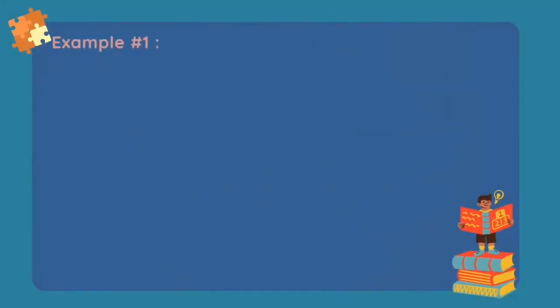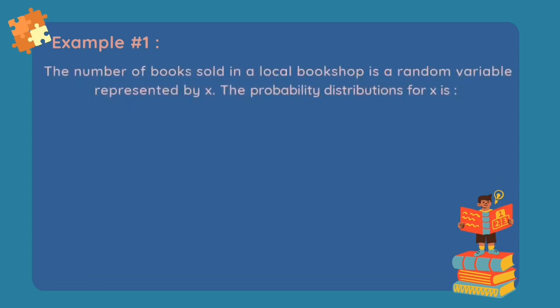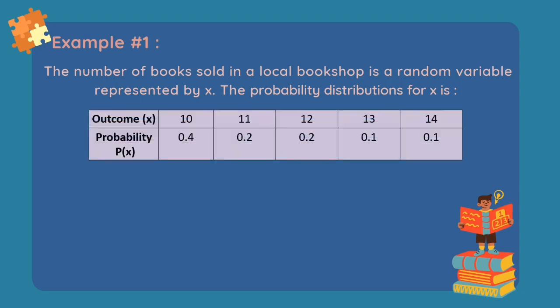Let's proceed to our examples. Example number 1. The number of books sold in a local bookshop is a random variable represented by x. The probability distribution for x has outcomes 10, 11, 12, 13, and 14. The probability that corresponds to 10 is 0.4, 0.2 corresponds to 11, 0.2 corresponds to 12, 0.1 corresponds to 13, and 0.1 corresponds to 14. Now let's find the mean, variance, and standard deviation.